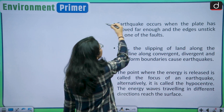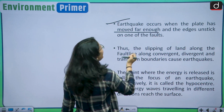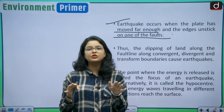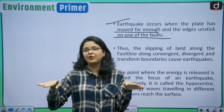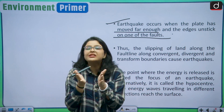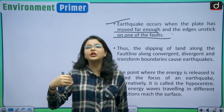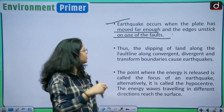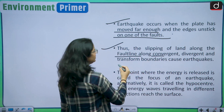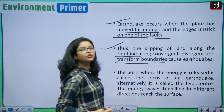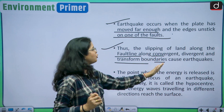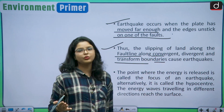The earthquake occurs when the plate has moved far enough and the edges unstick on one of the faults, causing the slipping of land along the fault line. This occurs along convergent, divergent, and transform boundaries — the three kinds of plate boundaries — and hence earthquakes are caused.